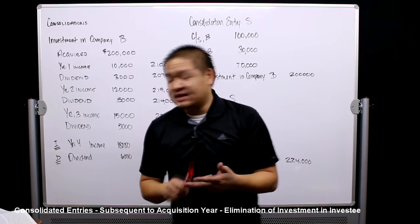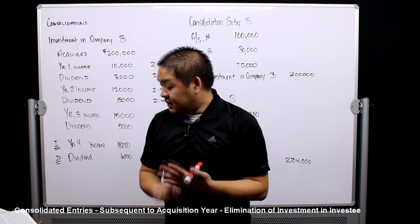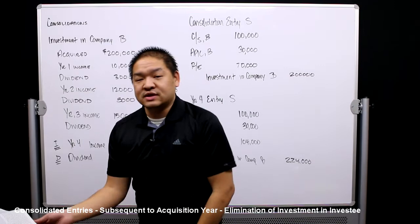Otherwise, consolidation entries I, D, and E stay the same, so we're not going to focus on A, I, D, and E. We're just going to look at consolidation entry S and how it works in subsequent years.